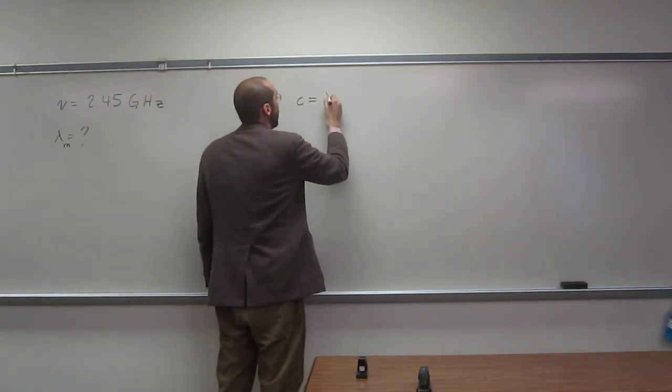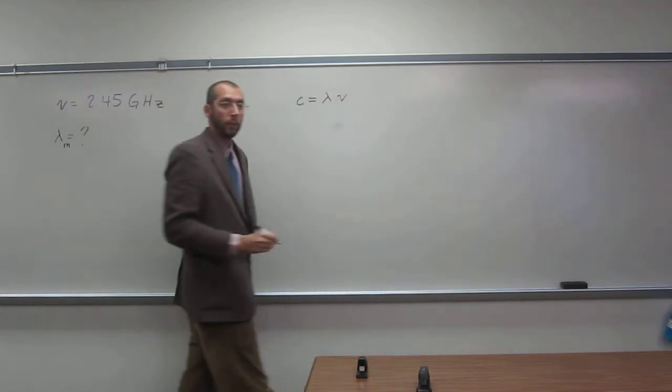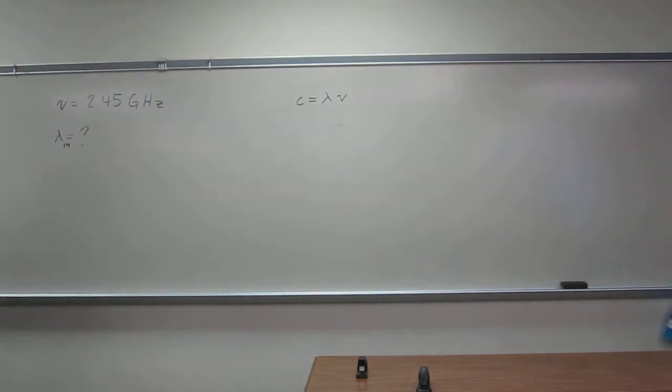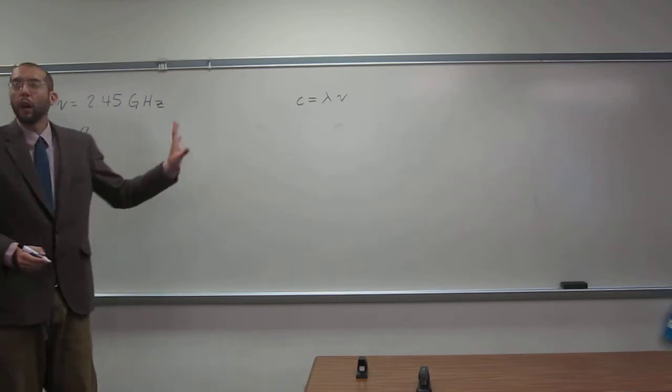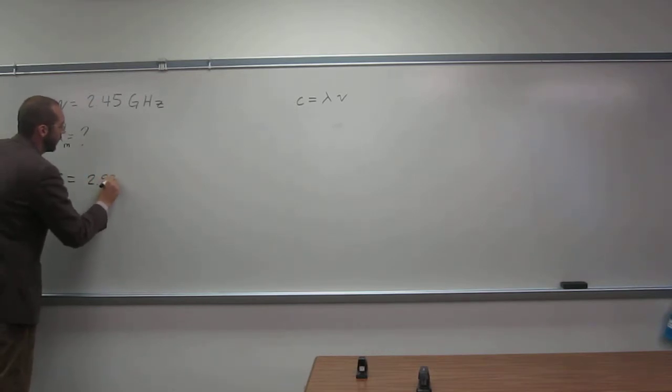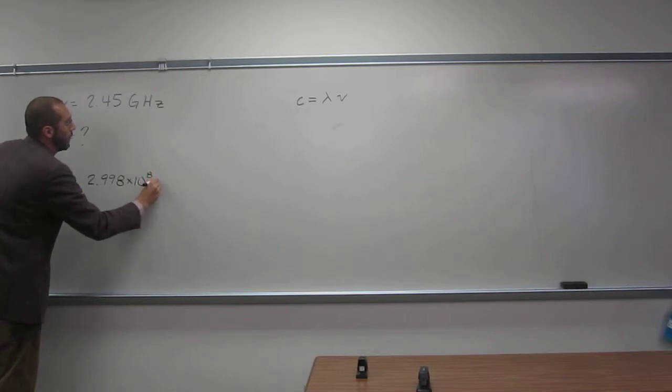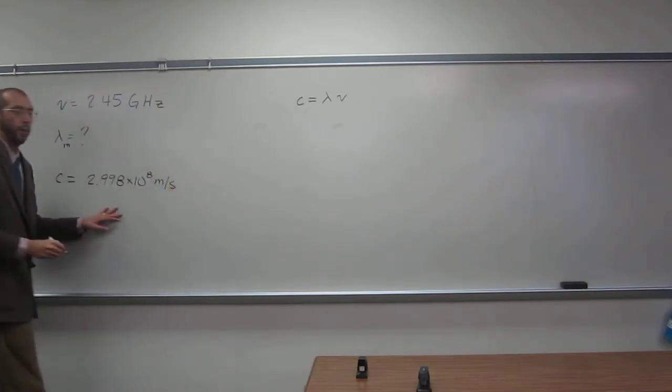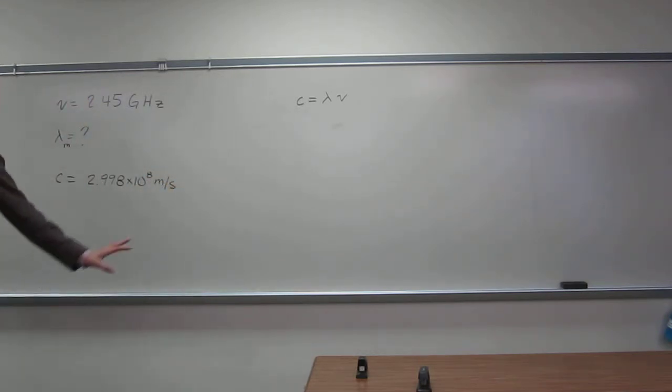The speed of light equals the wavelength times the frequency. The speed of light is always going to be given to you. So C equals 2.998 times 10 to the 8th meters per second, or 3.00. You'll get a very similar answer, by the way.